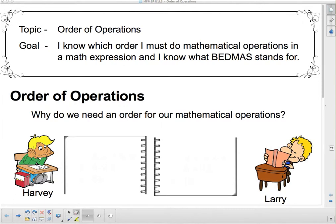So order of operations. I'm first going to try and convince you that we actually need to know this. Why do we need an order for our mathematical operations? So here we have Harvey and Larry. Harvey and Larry are hard at work in their math books, and they're both doing the same question. So what question are they doing? This one. What is 6 plus 3 times 4?